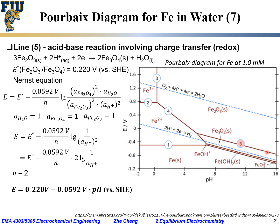This equation gives the analytical solution for the boundary that separates Fe₂O₃ and Fe₃O₄. This is Line 5 — the last line we discussed for the Pourbaix diagram for iron in water with solid products.